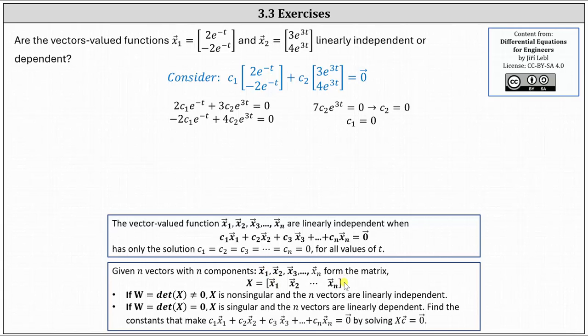Then we find the determinant of matrix X, which is called the Wronskian. If the determinant doesn't equal zero, the vectors are linearly independent. If the determinant equals zero, then the vectors are linearly dependent. Notice this method only works when matrix X is a square matrix, or an n by n matrix.